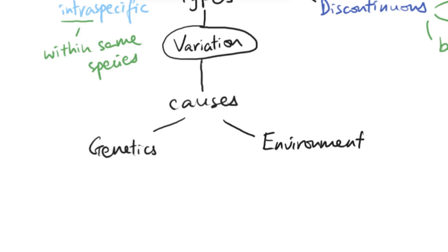Something caused by a mixture of both would be things like height, weight, hair length, or hair colour — all of those could be a mixture of the two. Skin colour is another one: your genetics will determine your skin colour, but whether you are exposed to sun often or get tanned also has an influence. There are very few examples of variation caused only by environment, but things like scarring, tattoos, or piercings in humans would be variation only due to the environment.